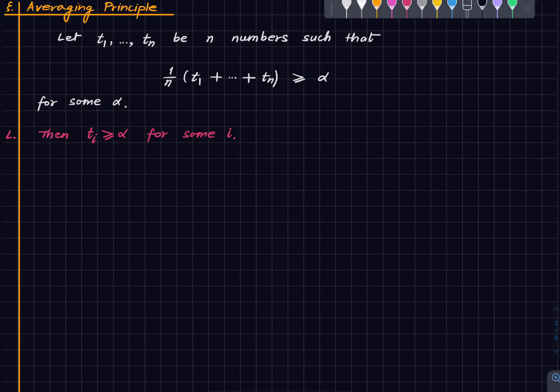Then at least one of these n numbers will be at least alpha. Right so there is i such that t_i is greater than or equal to alpha is what we want to say.